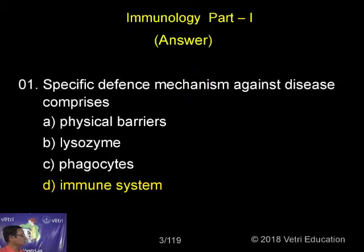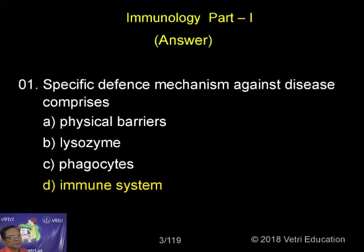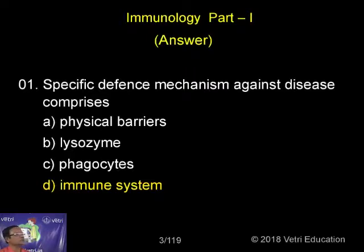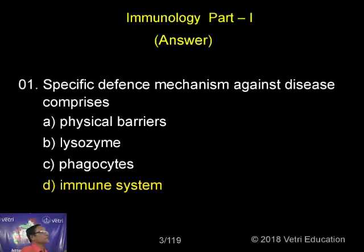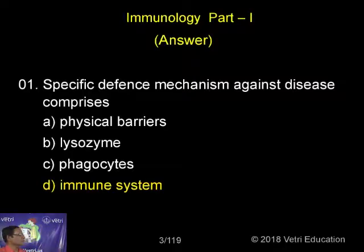Though physical barriers, lysozyme, and phagocytes come under the immune system, they are non-specific in nature. Since they are present right from birth, they are not attacking specifically the various antigens that enter the body — that is why they are not considered a specific defense. Generally speaking, the immune system is a specific system, and we classify it into natural or non-specific, and acquired or specific.